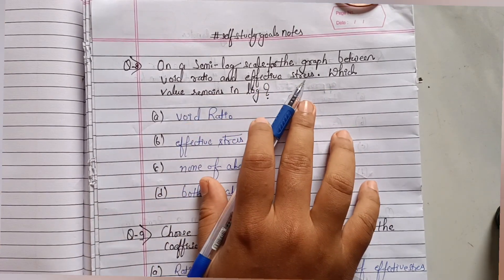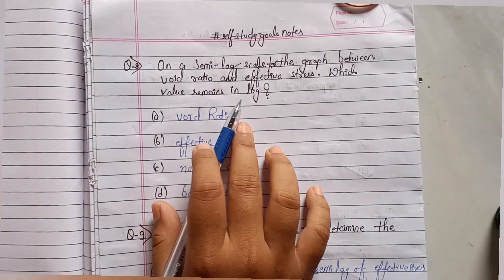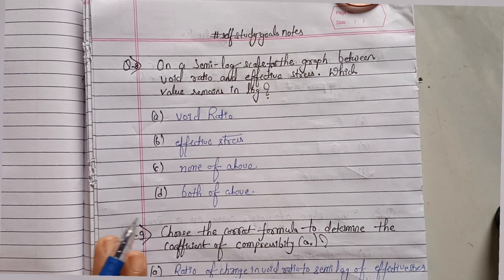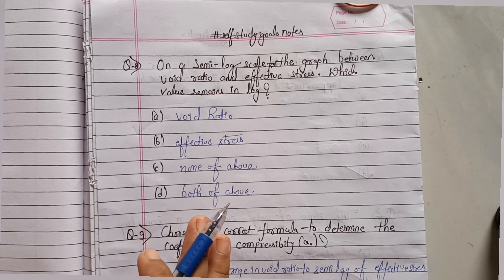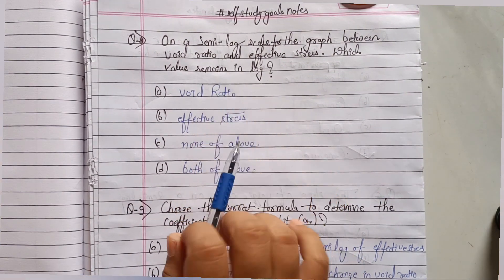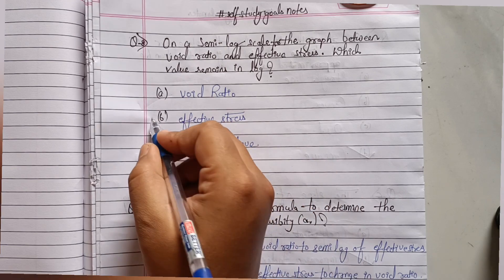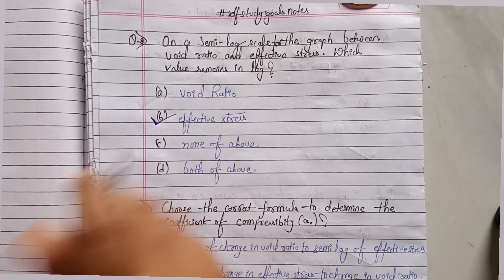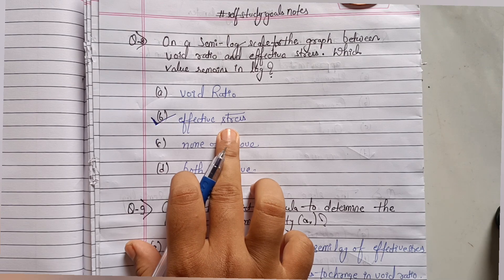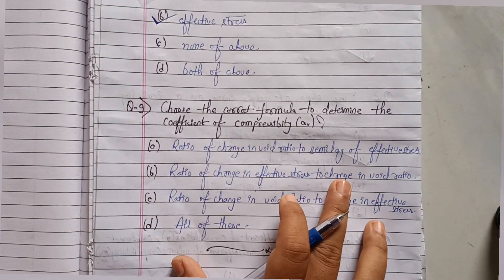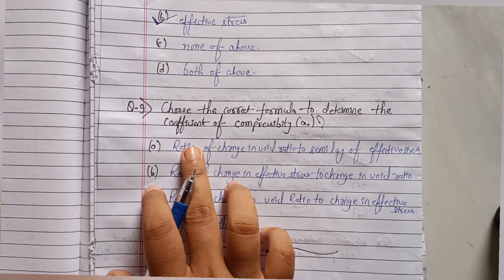Question eight: on a semi-log scale for the graph between void ratio and effective stress, which value remains in log? For the semi-log scale, the effective stress is plotted on the log axis and the void ratio is on the simple linear axis. So option B is the correct option.